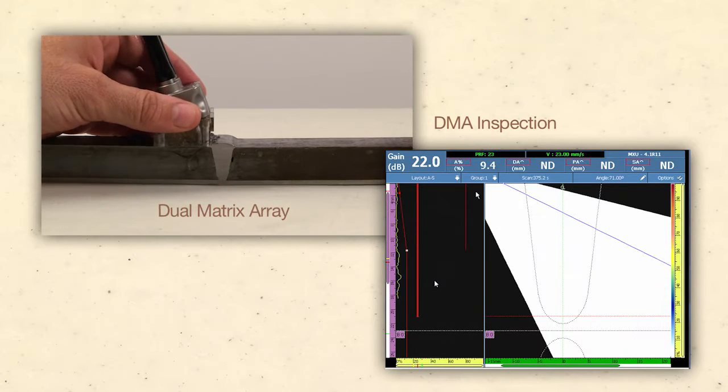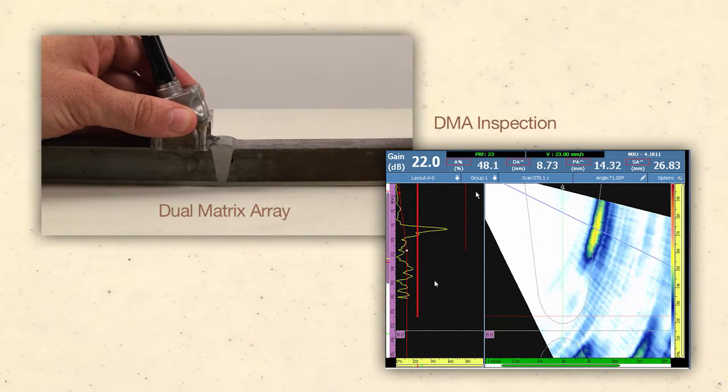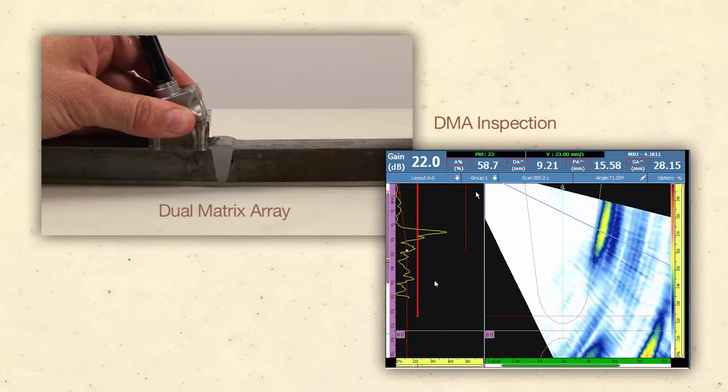DMA probes are only recommended for materials and weld bevels where shear wave pulse echo inspection is not possible.